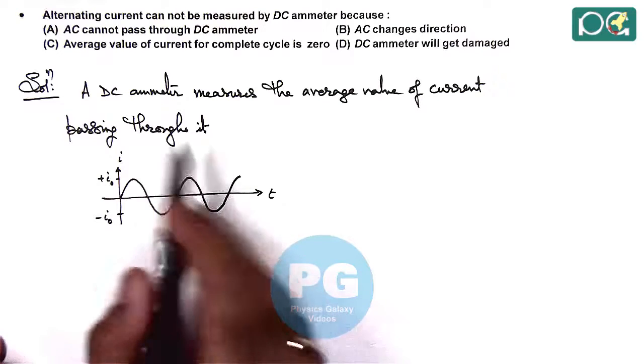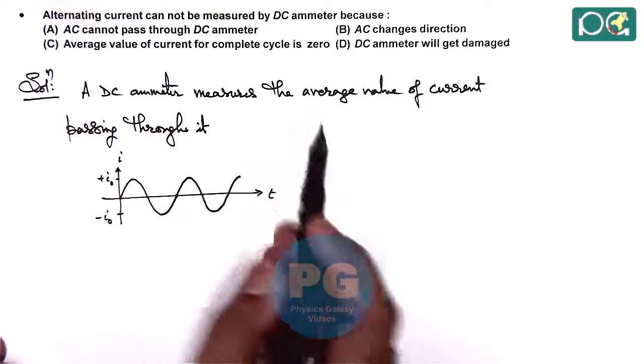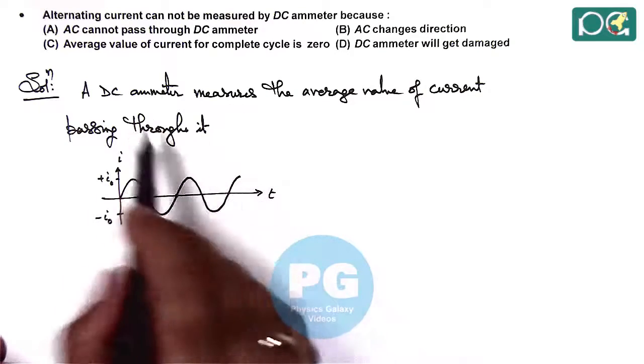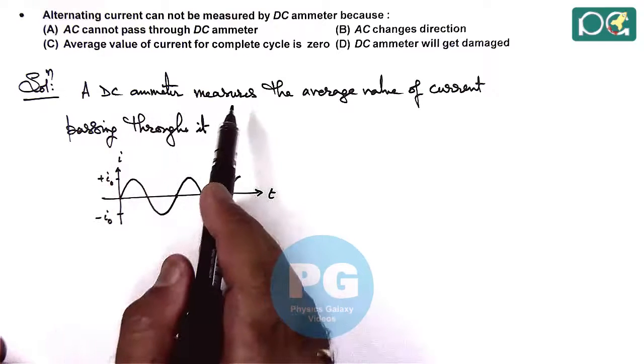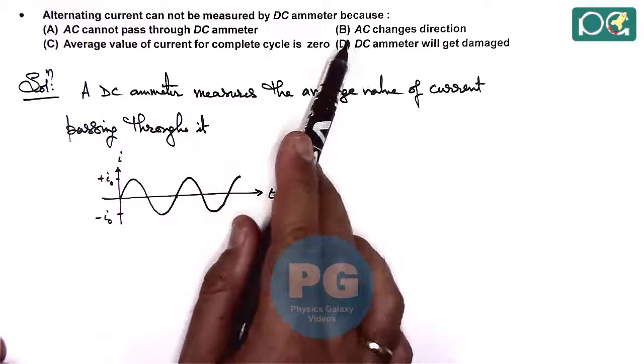And if the total charge passing through it over cycle is zero, that means the deflection in DC ammeter will also be zero and because of inertia of the needle in DC ammeter it will not get deflected because AC is continuously changing the direction. So here option B can also be considered.